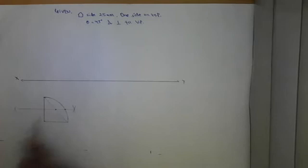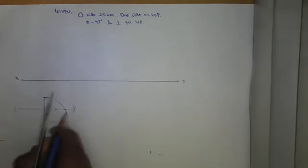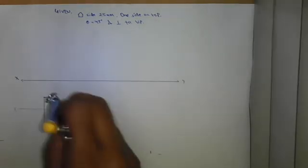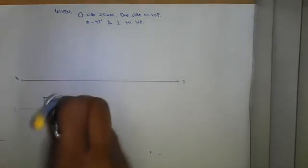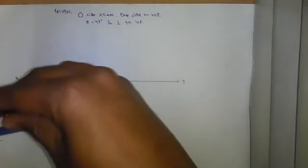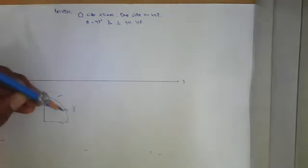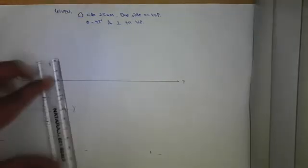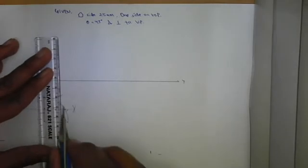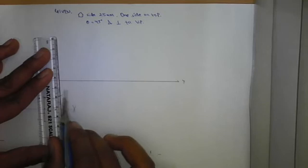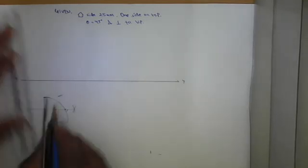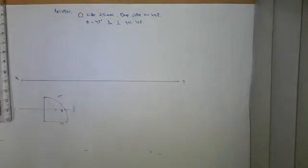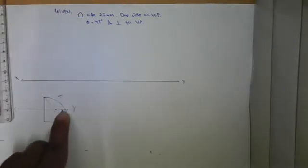So from points 4 and 6, make the perpendicular bisector of the 4-6 line. Now join these points to get point 5. This is point 5, from which you can make the pentagon.